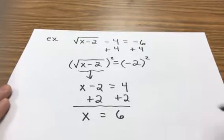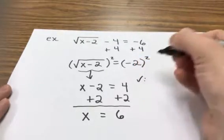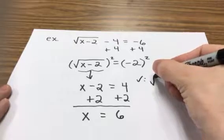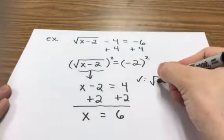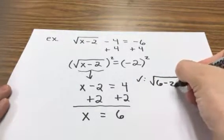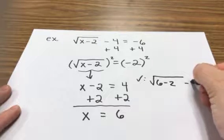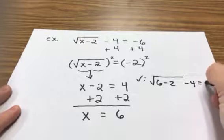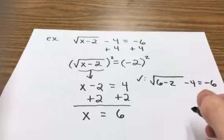Let's go ahead and check that. So when I put 6 back into the x spot, I get 6 minus 2 on the inside. And I'm going to have to subtract 4 to get back to negative 6. Let's see if that works.